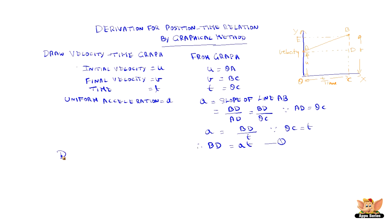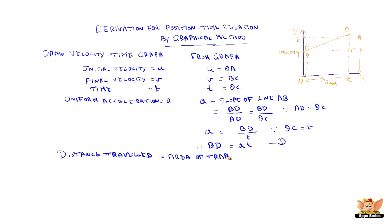Now let us find out the distance travelled by the body, since we need to find the position-time relation. The area covered by line AB with the time axis is a trapezium. So the area of trapezium OADC is the distance travelled.